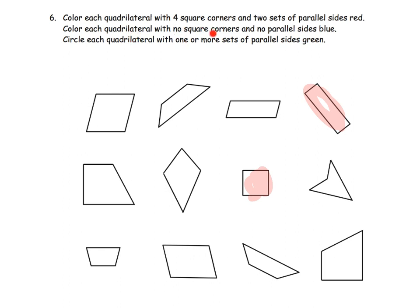Now color each quadrilateral with no square corners and no parallel sides. This shape has no square corners but it does have parallel sides. This one has parallel sides, this one has parallel sides. This one doesn't look like anything is parallel and it doesn't look like we have any square corners — so let's color that blue. Looking at the remaining shapes, I see parallel sides here, parallel here, and parallel here. But this shape has four sides, no square corners, and no parallel sides — so we should color that one blue.